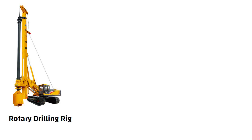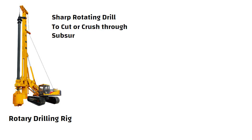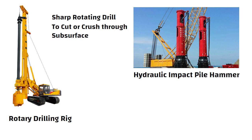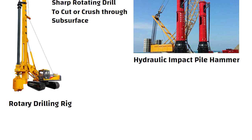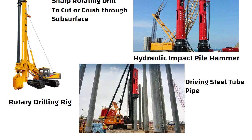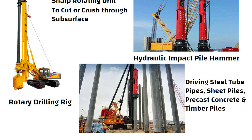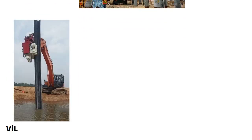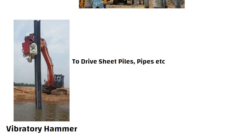A rotary drilling rig uses a sharp rotating drill bit and downward pressure to cut or crush through the subsurface. Hydraulic impact pile hammers are suitable for driving steel tube pipes, sheet piles, precast concrete and timber piles. A vibratory hammer is used to drive sheet piles, pipes or other elements into the soil by vertical vibrations.